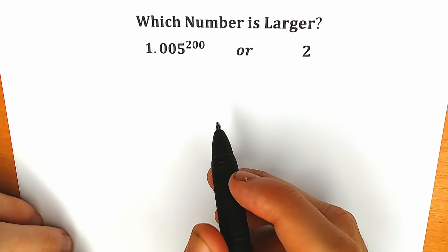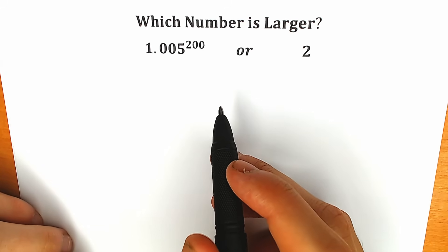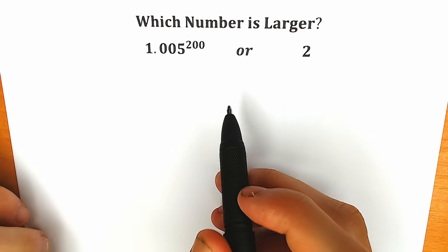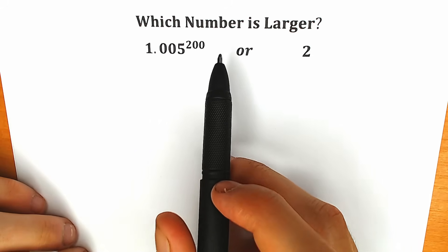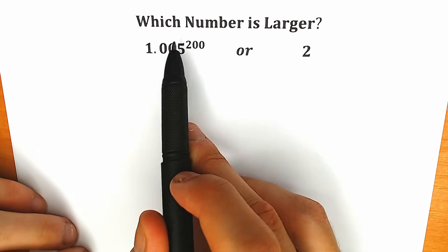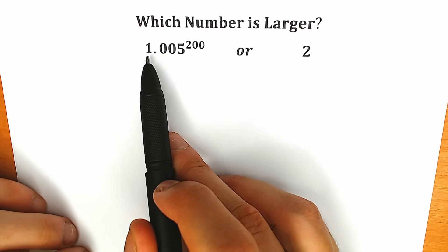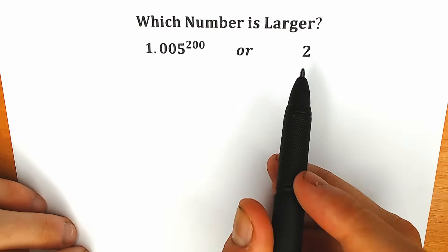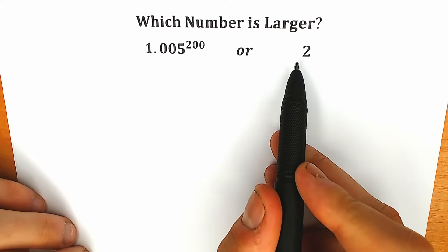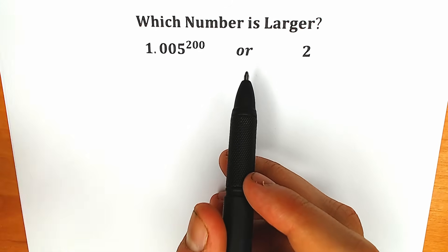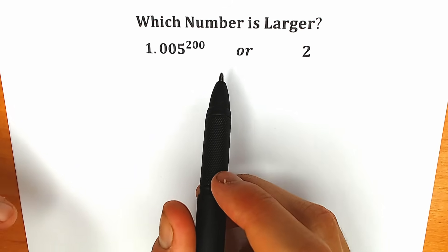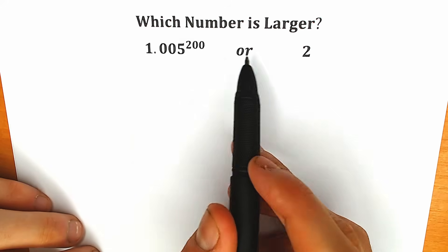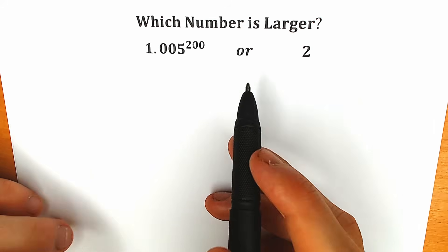Hello everyone! Happy to see you here! Welcome back to my channel Higher Mathematics! Today we have a very interesting question from an entrance examination. Which number is larger? On the left side we have 1.005 to the power 200, and on the right side we have 2. So which one is larger? Let's test our intuition — write your assumption down in the comment section.